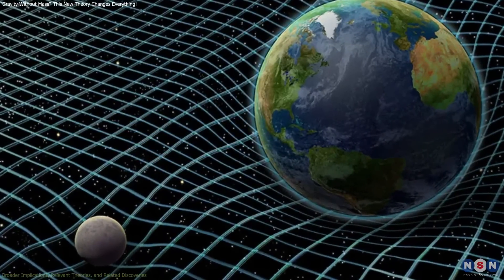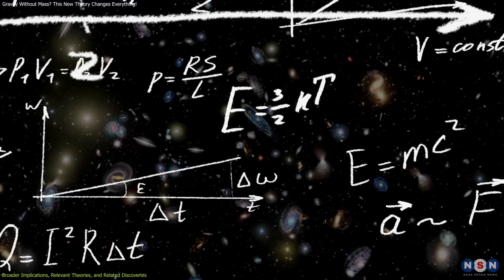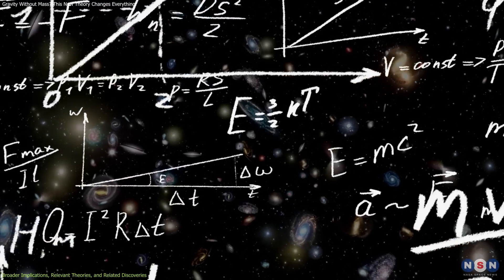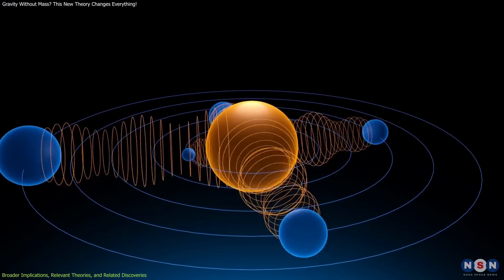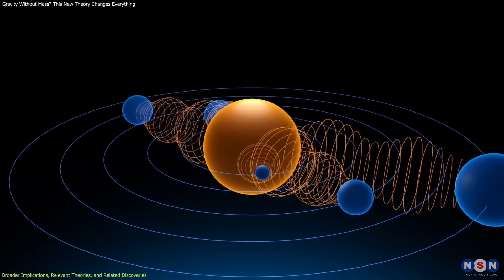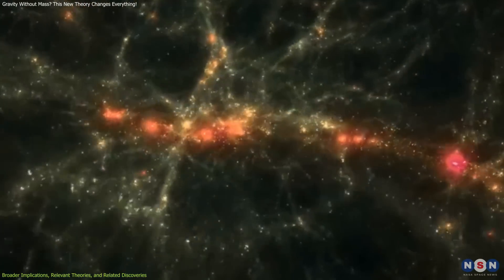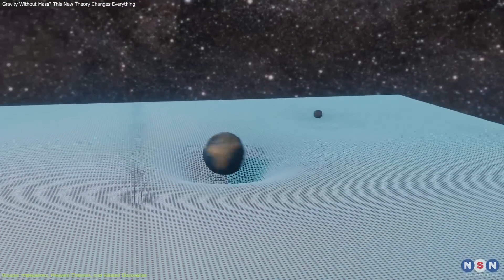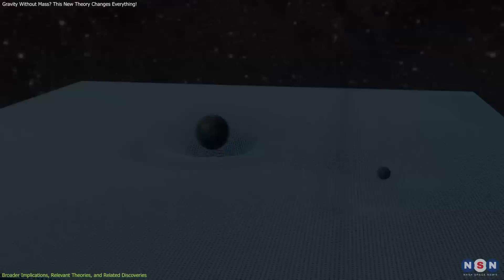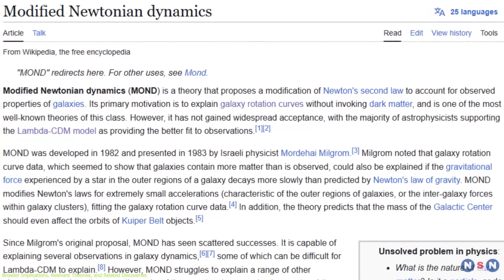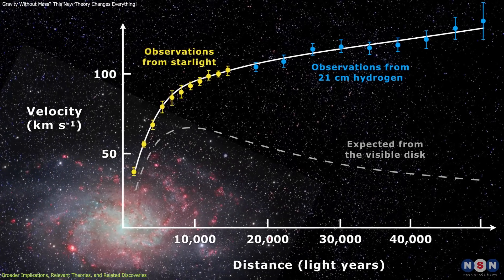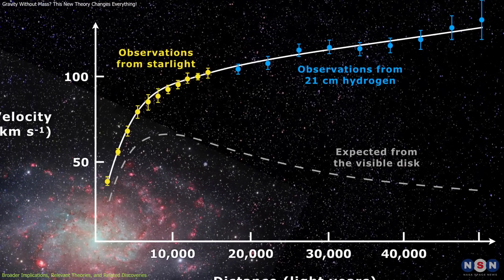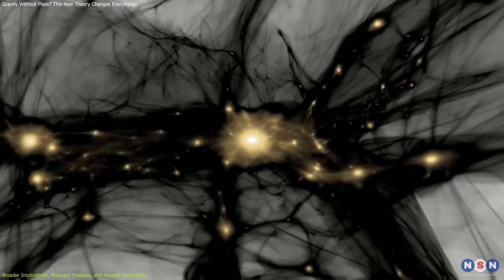If gravity can exist without mass, it challenges foundational principles in physics and cosmology, potentially leading to a paradigm shift in our understanding of gravitational interactions and the universe's large-scale structure. This also intersects with other alternative gravity theories. For instance, modified Newtonian dynamics suggests adjustments to Newton's laws to explain galactic rotation curves without relying on dark matter.